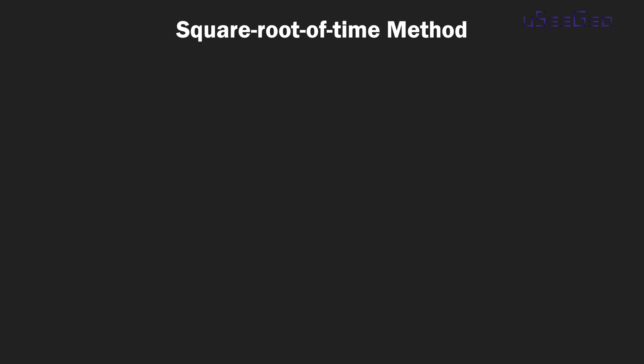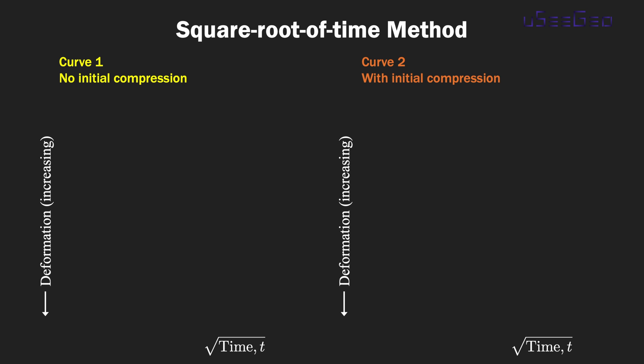For the square-root-of-time method, as the name suggests, you plot the deformation of your consolidation test data versus the square root of time. Depending on what part of the consolidation test data you use to plot this curve, you may get two slightly different types of curves. The first curve is where there's no initial compression, and the second curve is where you have an initial compression stage.